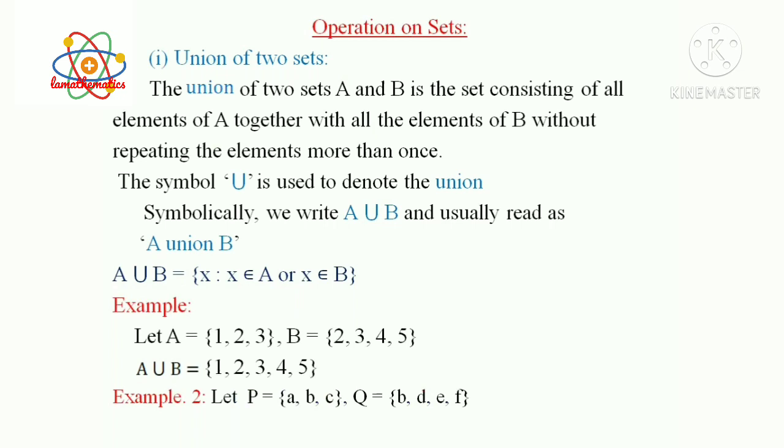Example 2: Using the above definition of Union, consider the example. Let Capital P = {A, B, C}, Capital Q = {B, D, E, F}. Here we have to find P ∪ Q, that is elements either in Capital P or in Capital Q.